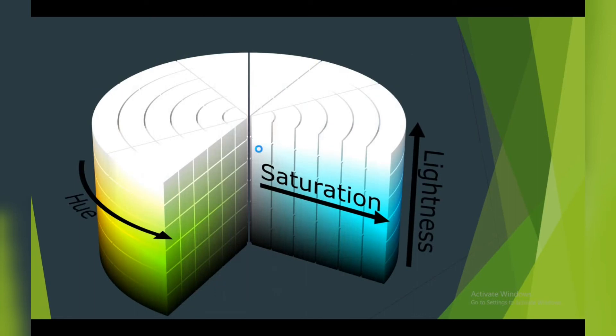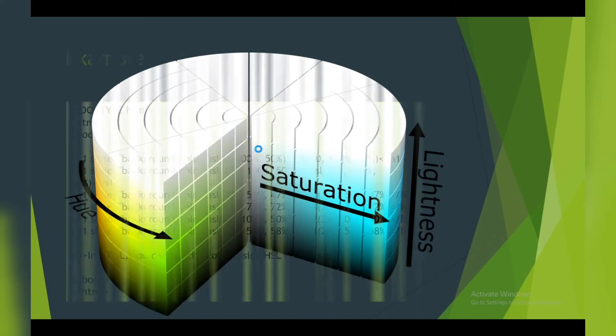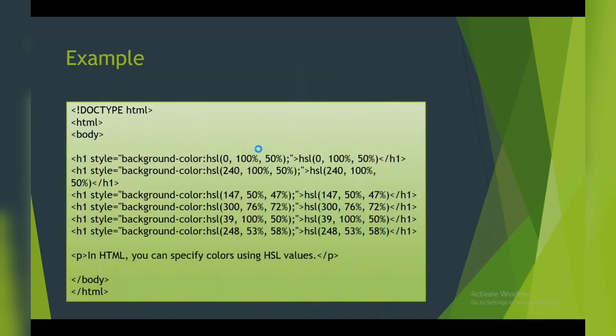To say in simple words: around the circle is hue, from center to vertical is saturation color, horizontal measurement is the lightness. Here I have given you a small example. You can try, you can pause and try by yourself.